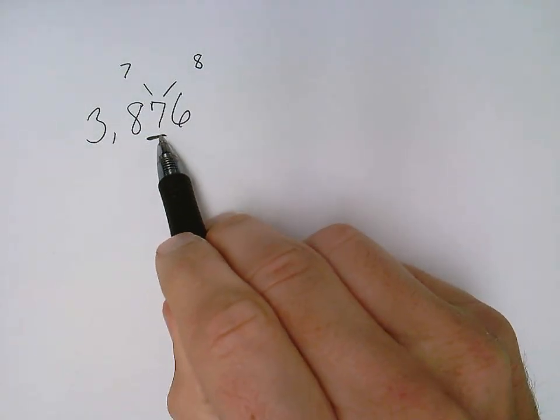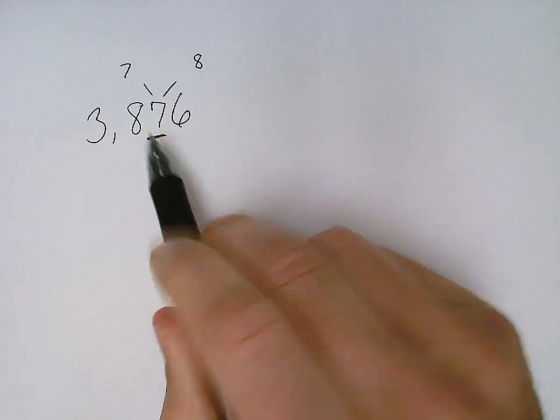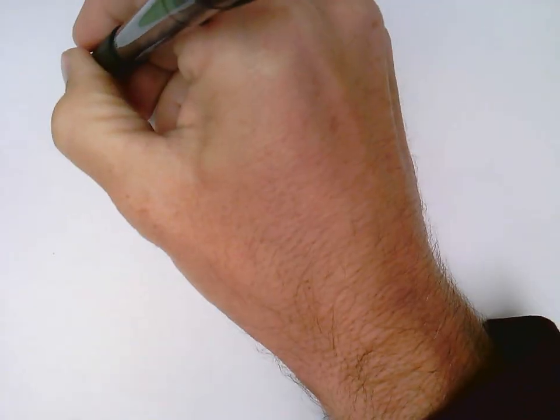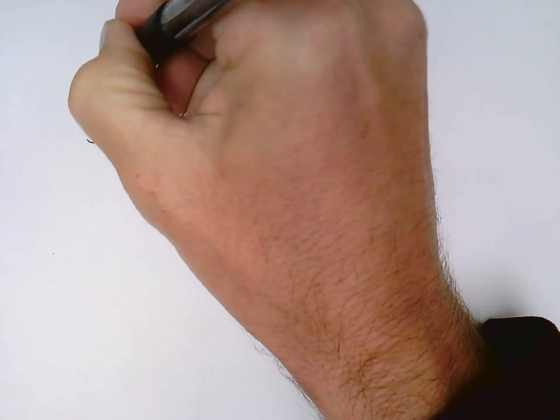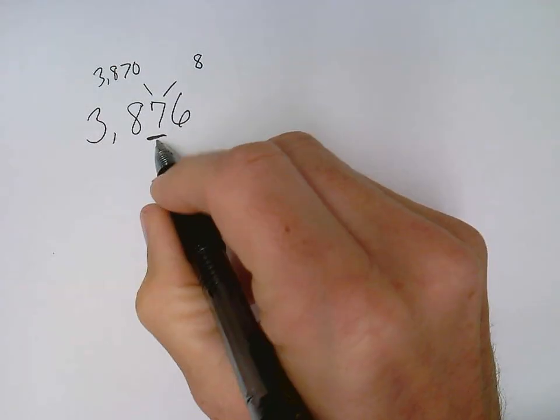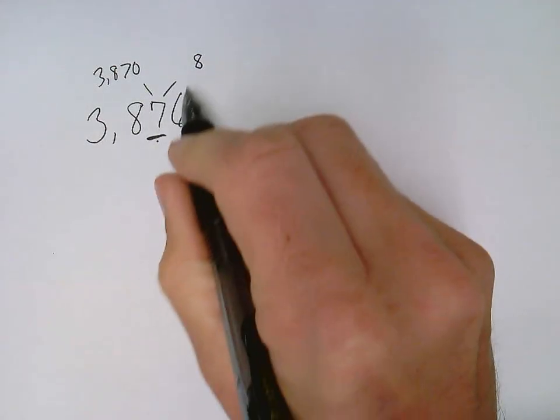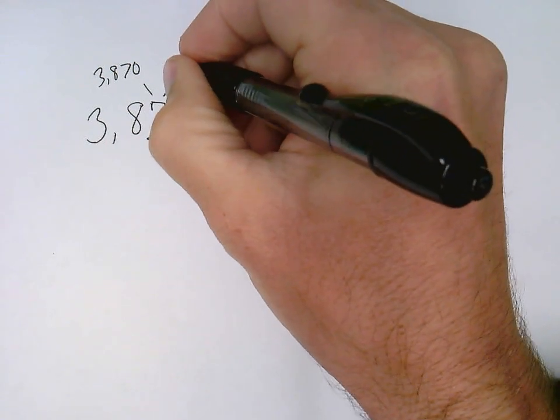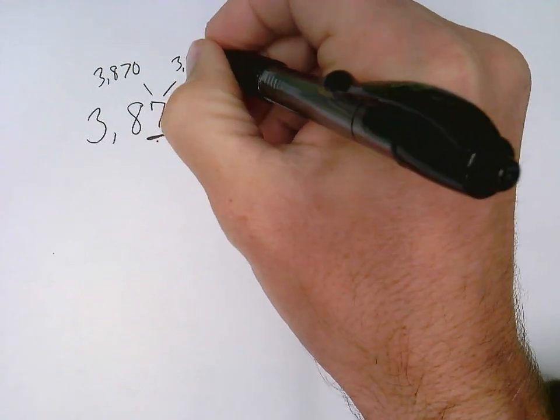If that tens place digit stays the same, then my number will become 3870, and if my tens place digit goes up one, then it will be 3880.